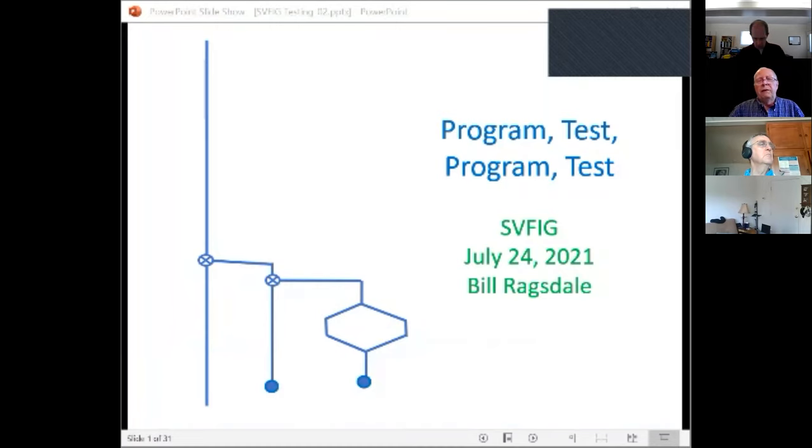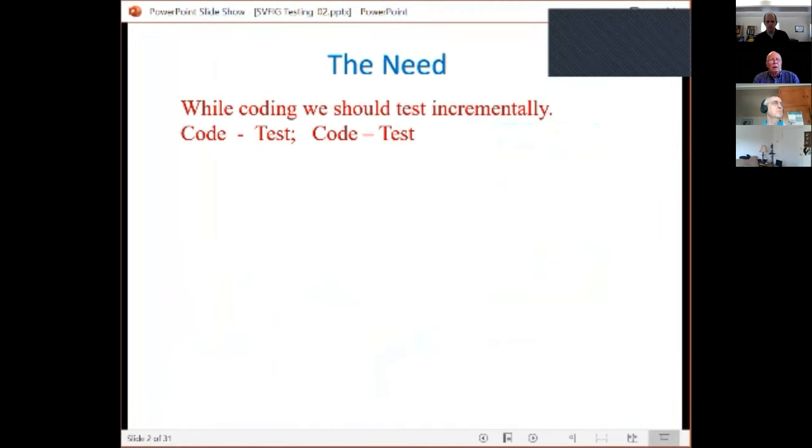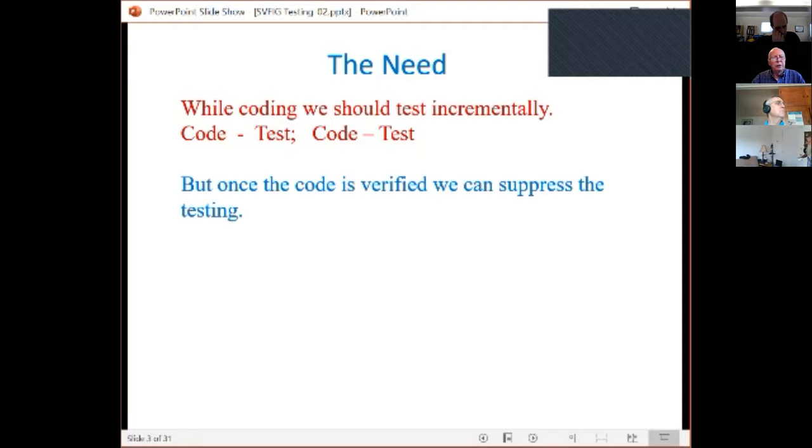Welcome to the Silicon Valley Forth Interest Group. It's July 24, 2021, and we're going to discuss some advantages and opportunities in program development and testing. As we all know, doing Forth, typically we do testing and programming. With Forth we're doing a lot of incremental programming and testing. Sometimes we may recompile the entire program or recompile small sections of the program, but I think testing should match up with this. As we do coding incrementally, we should be testing incrementally.